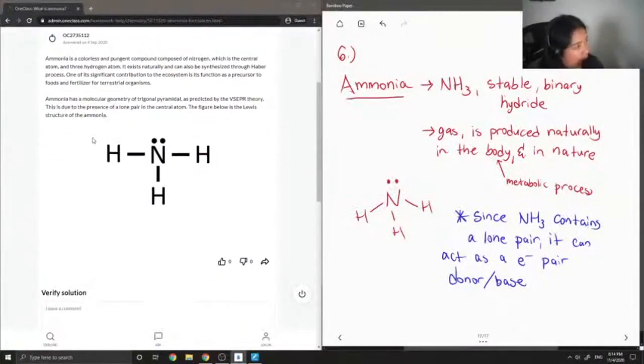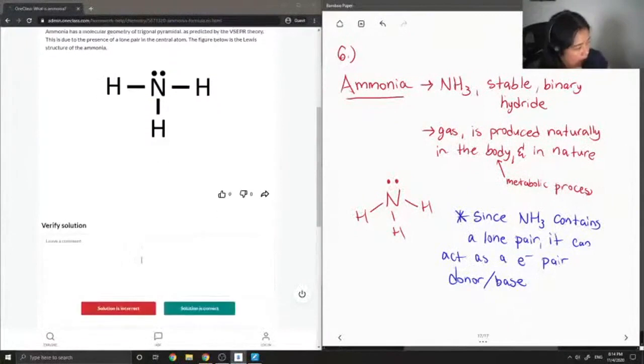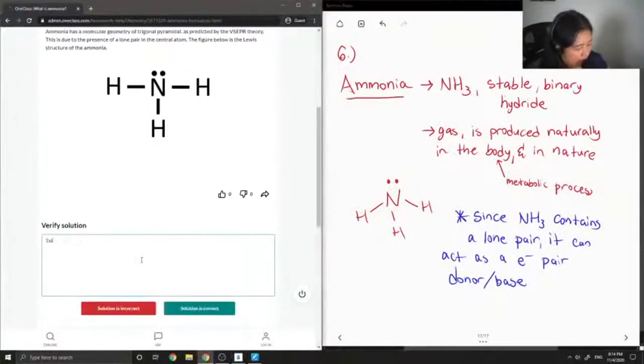Ammonia has a molecular geometry of trigonal pyramidal as predicted by the VSEPR theory. This is due to the presence of a lone pair in the central atom. Figure below is the Lewis structure of the ammonia. So this solution is correct.